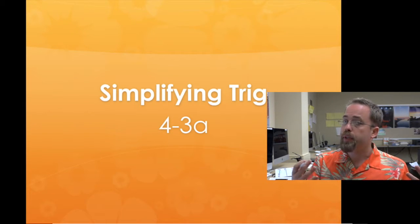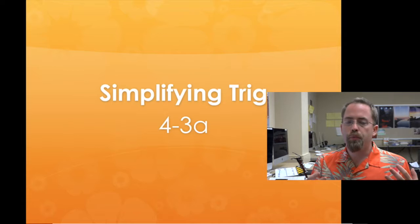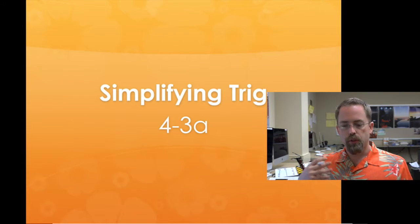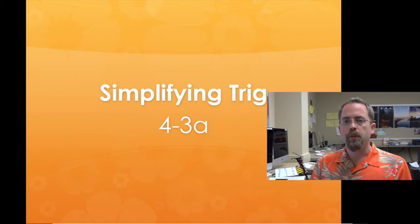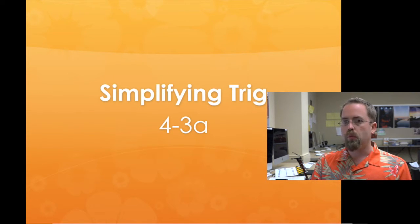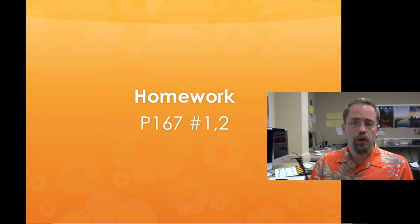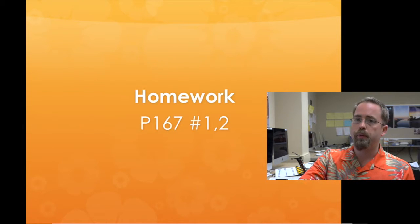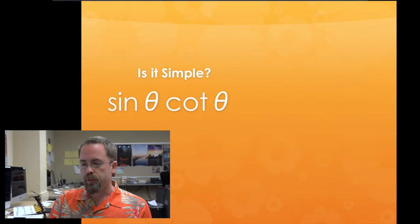This brings us to section 4-3, where we're talking about simplifying trig expressions — ones without equal signs, just a single expression — and finding out it's actually way more simple than it appears. Buried in the middle to keep you on your toes: your homework assignment is problems 1 and 2 from page 167. Our first example is sine theta times cotangent theta.